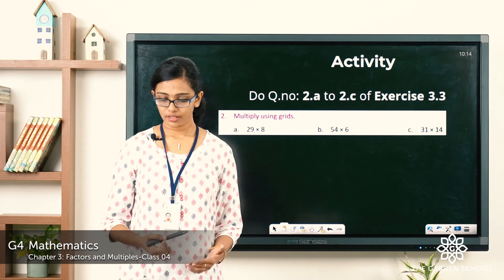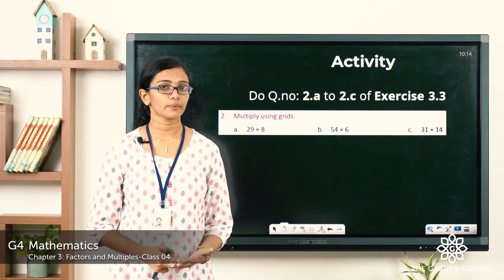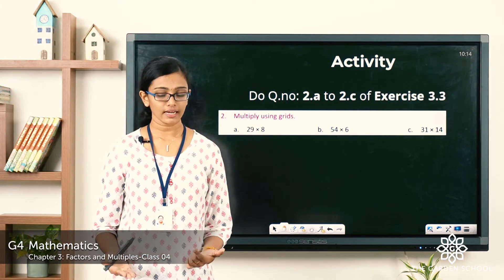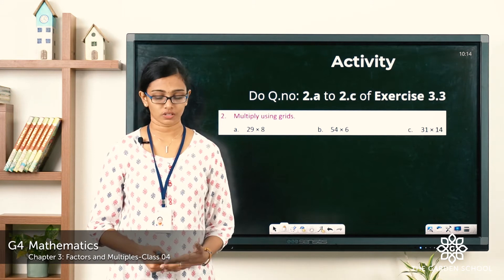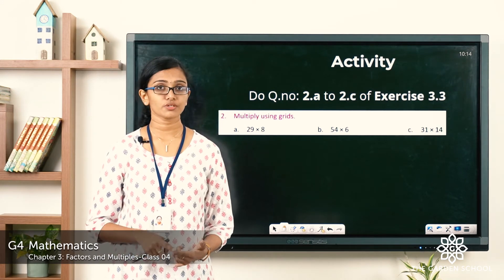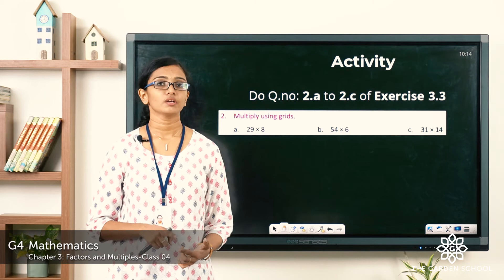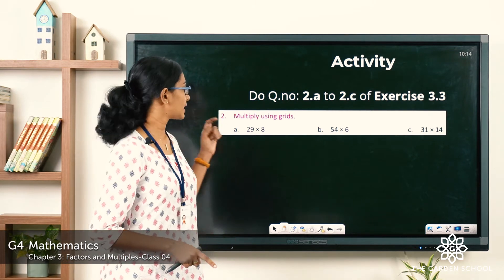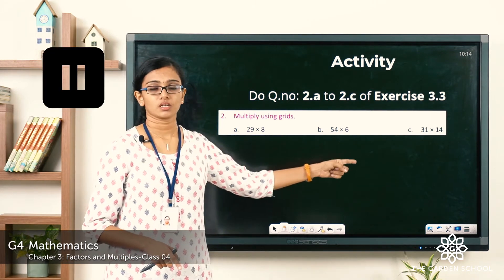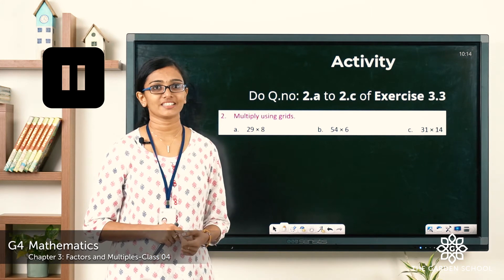Let's do an activity now. You can go through the topic on page number 41 of your textbook. Then move to exercise 3.3. You have to do question number 2, multiply using grids. You have to do the first three questions A, B, and C. You can pause the video, finish the activity and come back.